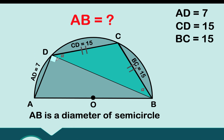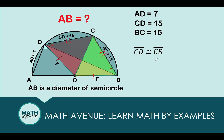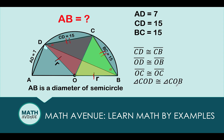Let's go back to our semicircle and draw radius OD. Since OB is also a radius, we form an isosceles triangle — both sides are radii of the same circle. Then let's connect OC, which is also a radius. We now look at triangles OCD and OCB. We have two sides congruent, another pair of sides congruent, and OC is equal to itself. Therefore, by SSS congruence, triangles COD and COB are proven congruent. Segment CD is congruent to CB, OD is congruent to OB, and OC is congruent to OC.